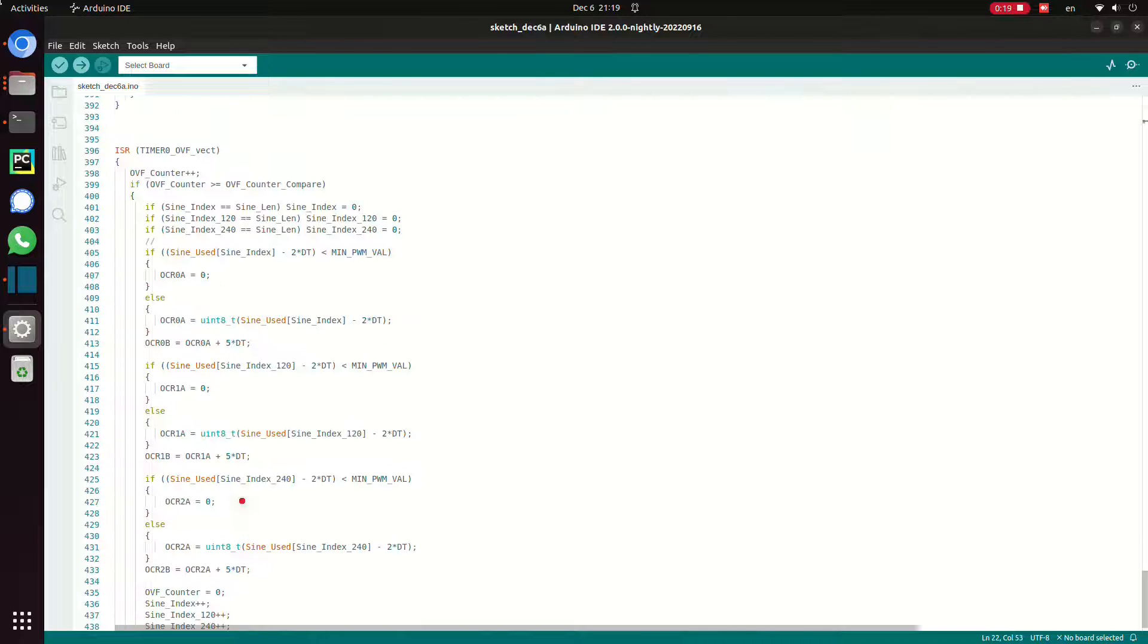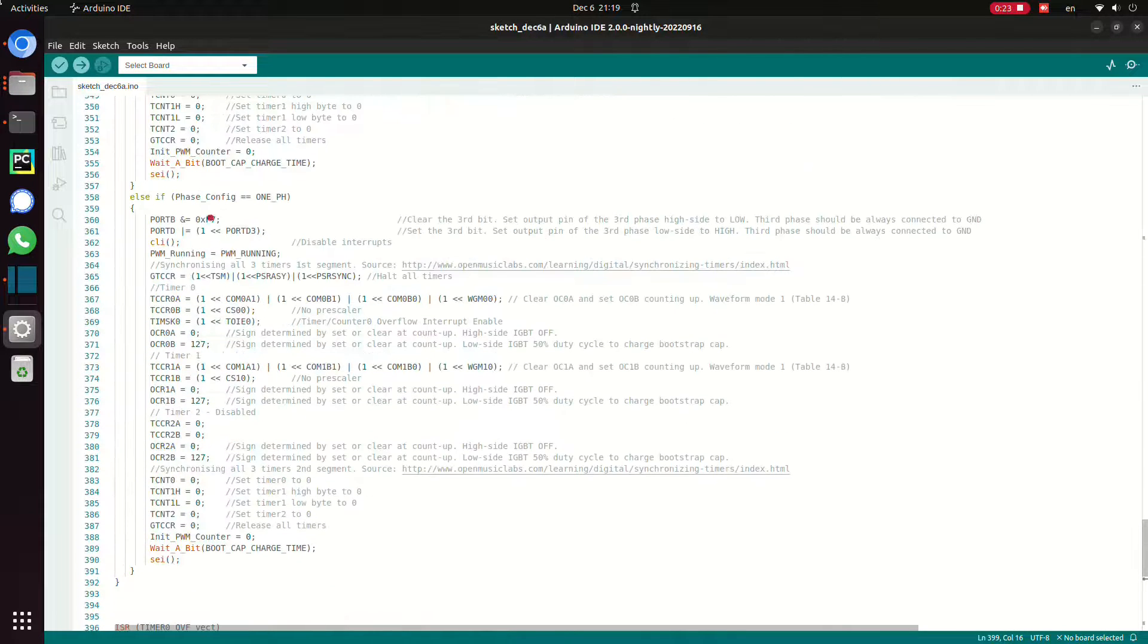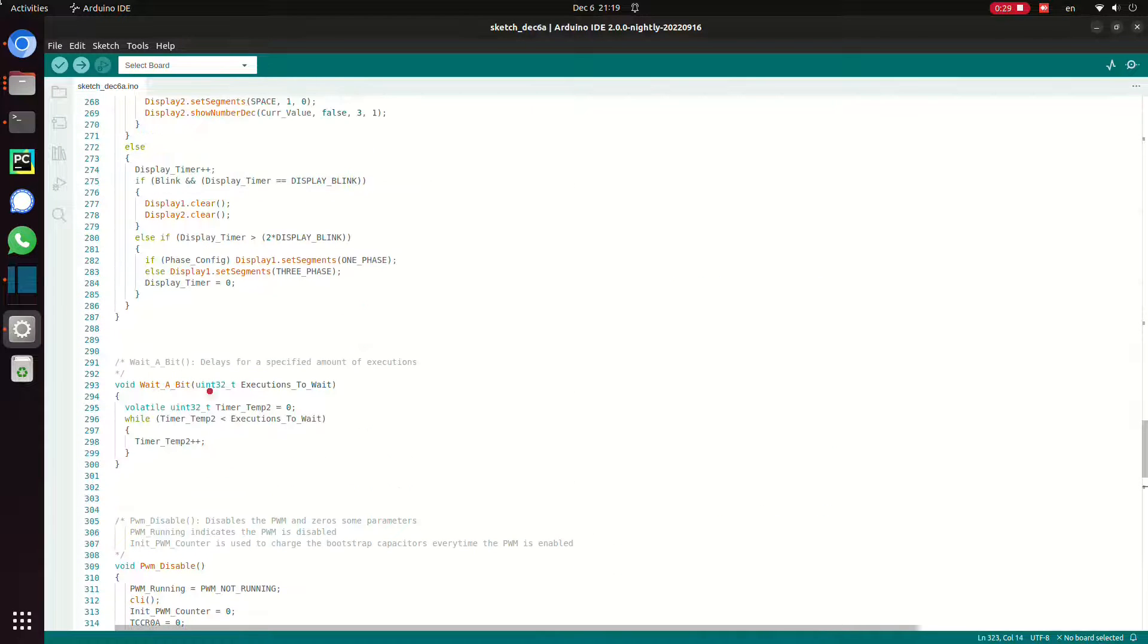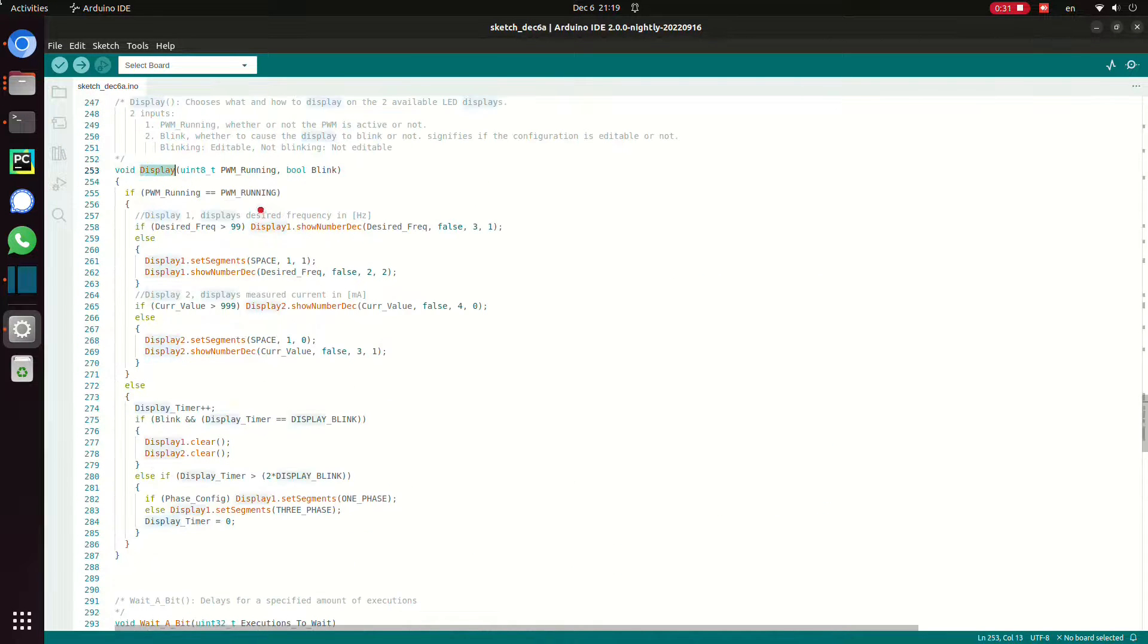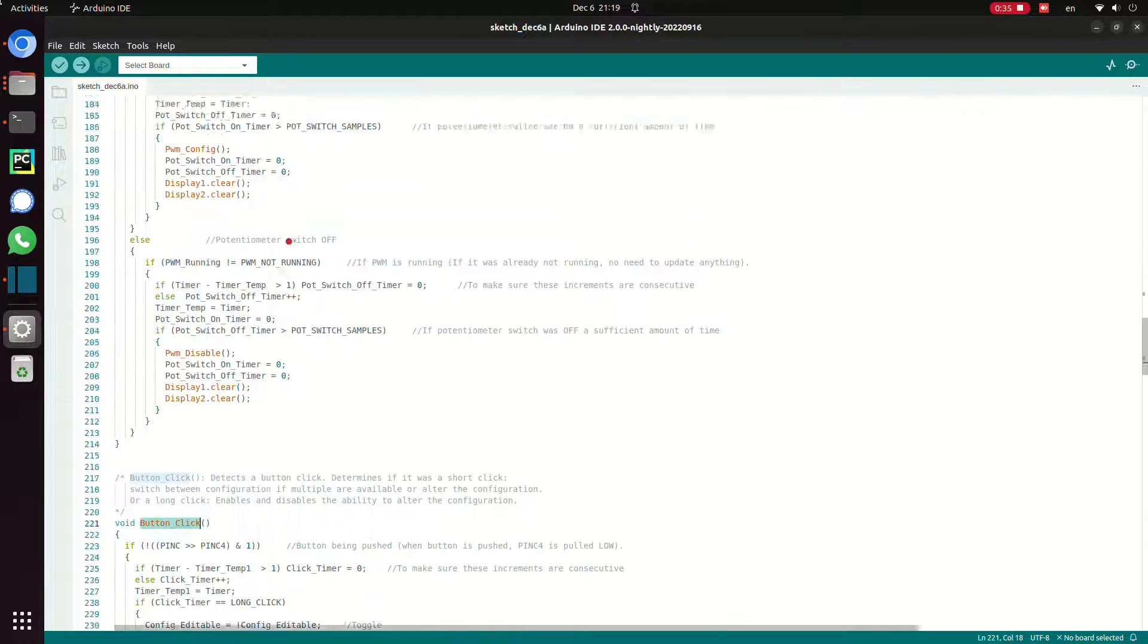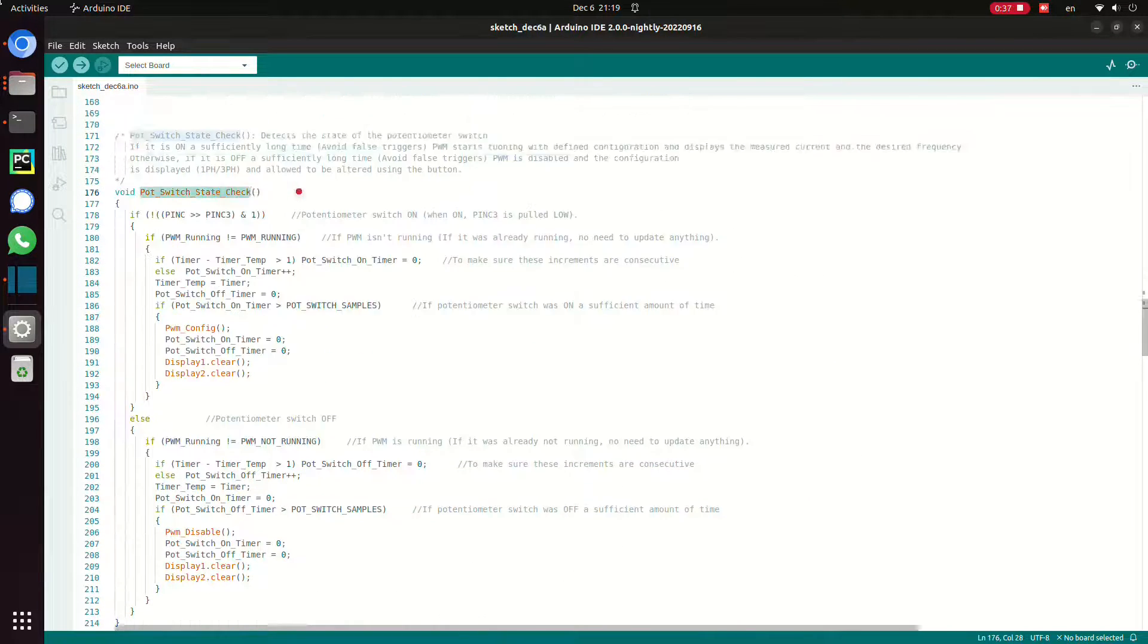The main parts of the code are the interrupt, which handles the PWM commands. The register configuration, which is set depending on if the motor is 1 phase or 3 phase. And a few functions which handle the display, the button, and the potentiometer.